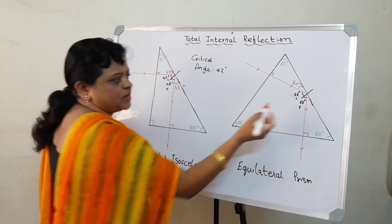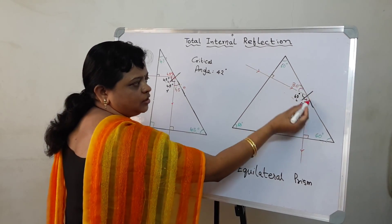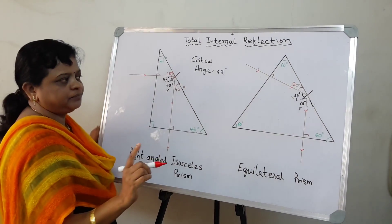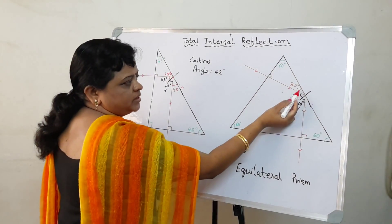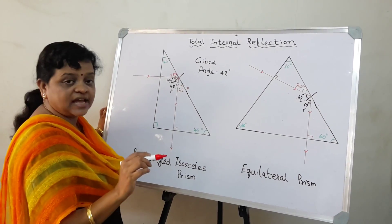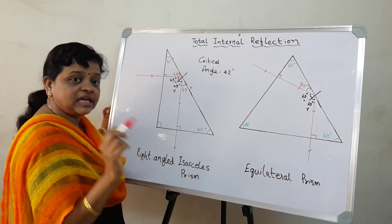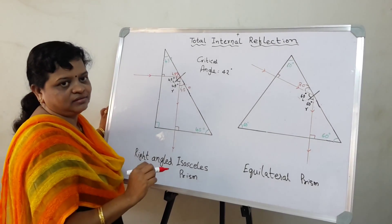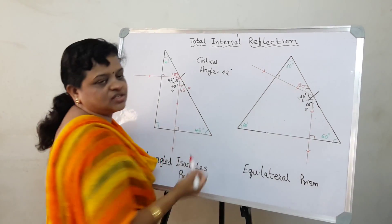Now if that is 30, you must have noticed I've drawn here the perpendicular to this, which is a normal. Now this is a normal, this is 30, this is 60. So the angle of incidence - what is an angle of incidence? The angle between the incident ray and the normal. So here we go, you have 60 degrees.